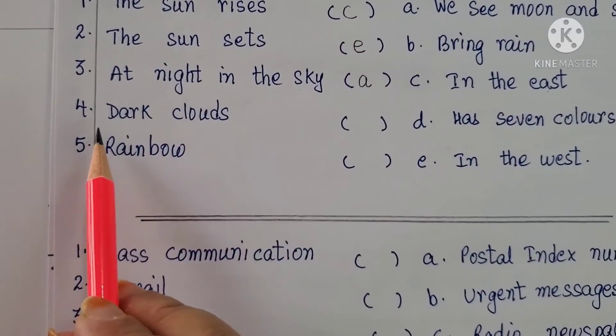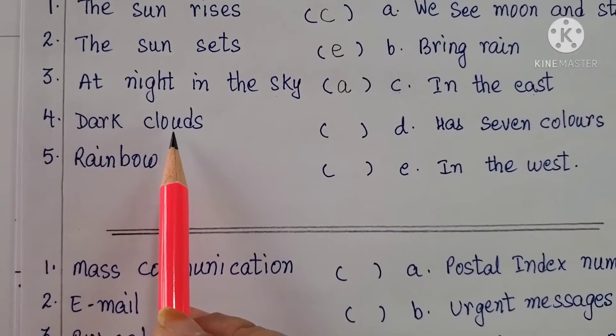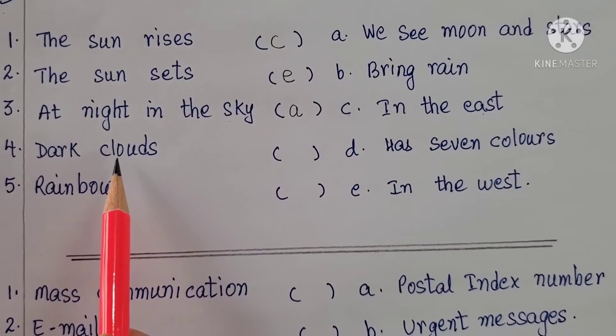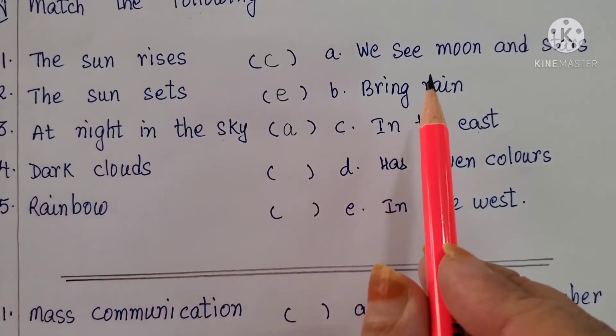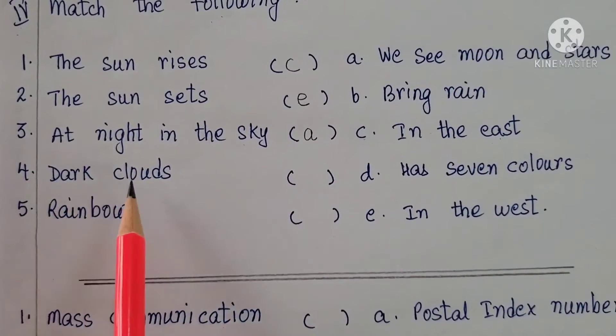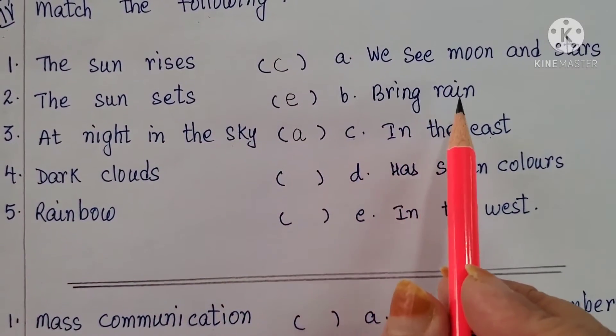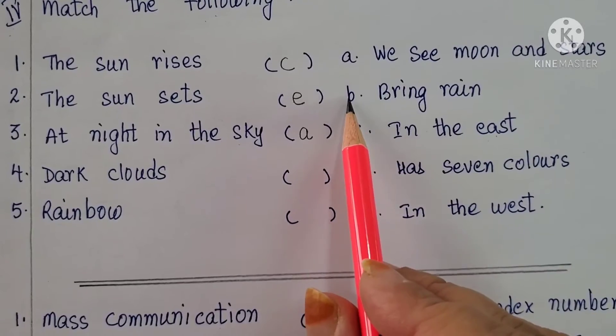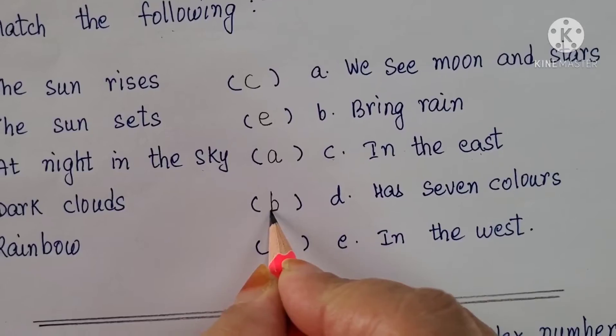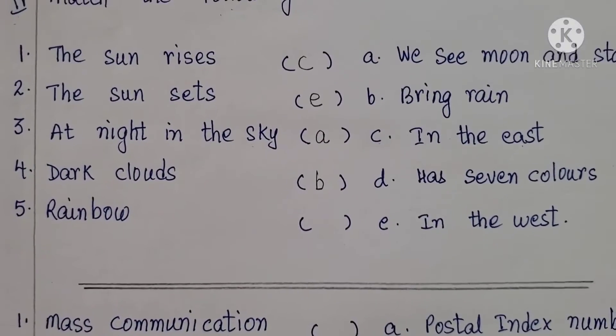Fourth one. Dark clouds. When are they? When will we see dark clouds? And what will they bring us? Rain. They bring us rain. Dark clouds bring rain. So which alphabet is this? B. So you all need to write here B.